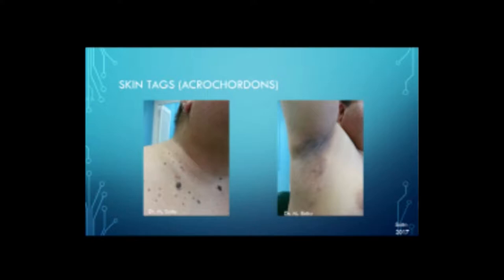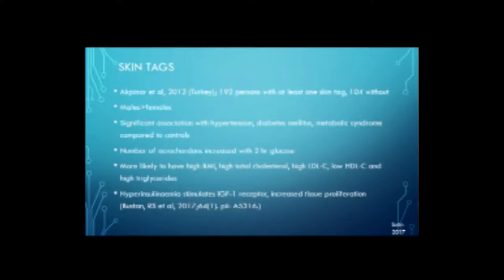You can also get skin tags, commonly seen around the neck, usually in the same places as acanthosis nigricans, in the axilla as well. A study by Akpenar et al. in Turkey compared patients with at least one skin tag versus those with no skin tags. He found more males than females, with significant association with hypertension, diabetes, and metabolic syndrome. The number of acrocordans — the other name for skin tags — also increased with two-hour glucose. They were more likely to have high BMIs, high total cholesterol, high LDL-C, low HDL-C, and high triglycerides.